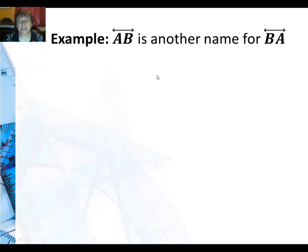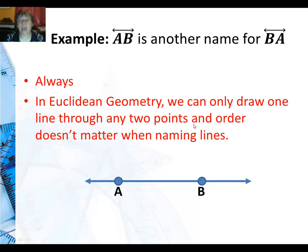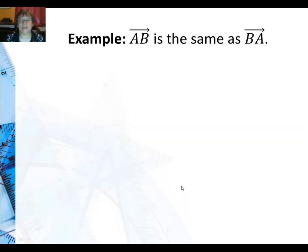For our next example, we ask if line AB is just another name for line BA. Is that true? Well, if I have a line that's got point A and point B and I draw a straight line through it, yes, this is always true. Why? We can only draw one line through any two points, and order doesn't matter when naming lines because they go off equally in both directions. So AB, line AB, is the same name as line BA, which means sometimes we can have fun trying to spell things out.